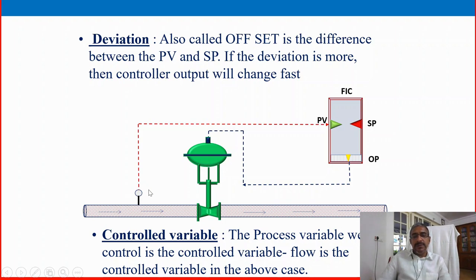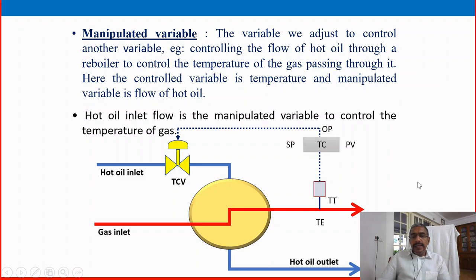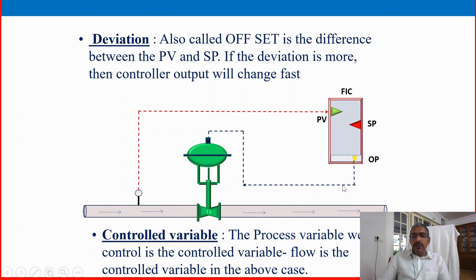We have studied: primary element and transmitter — transmitter producing an output of PV (process variable); the controller FIC; SP the set point; output — the produced signal; and the controlled variable and final control. A manipulated variable is the variable we adjust to control another variable. Example: controlling the flow of hot oil through a reboiler to control the temperature of the gas passing through it — here the controlled variable is temperature and the manipulated variable is the flow of hot oil.